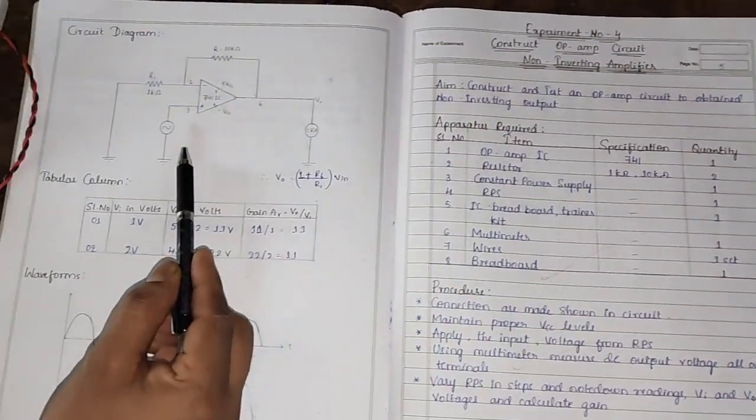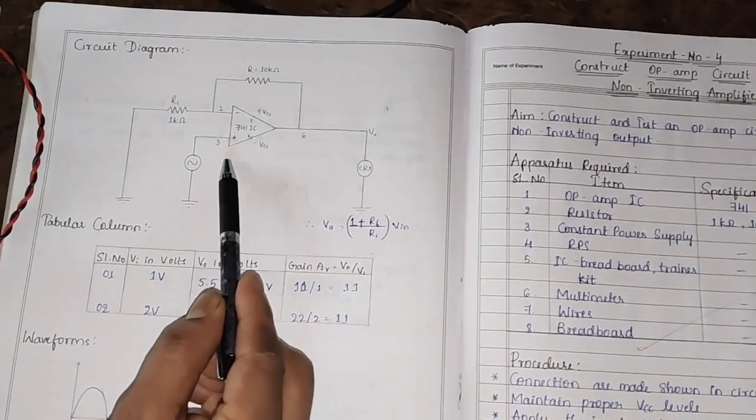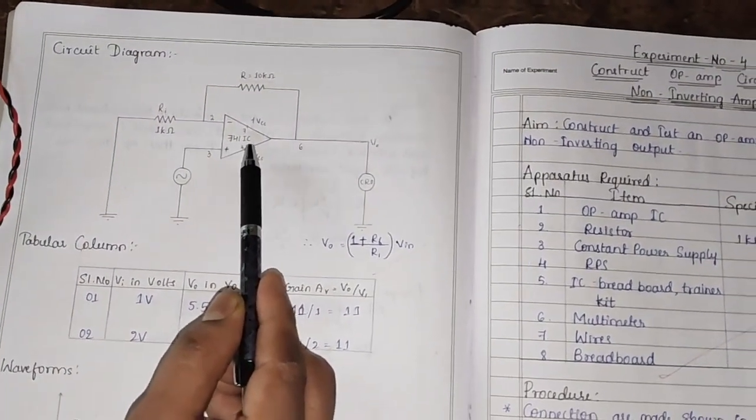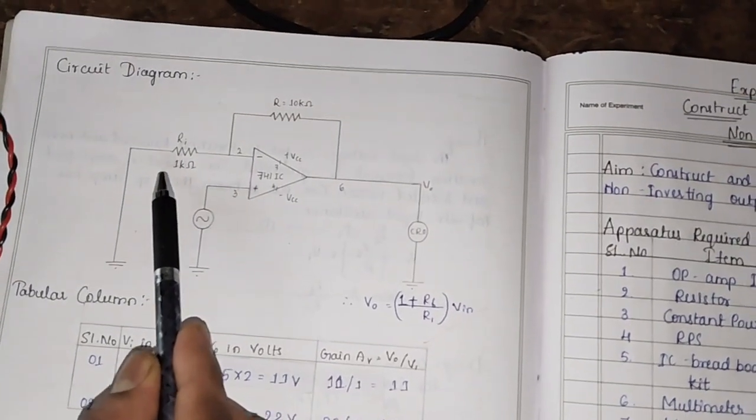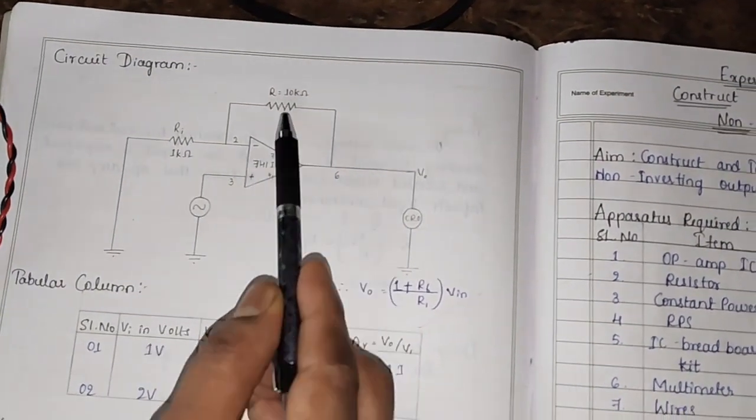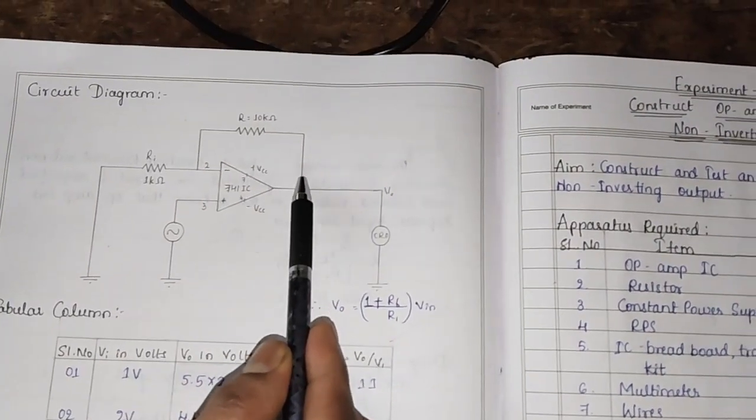In the circuit diagram, here we can see it consists of op-amp IC 741 and an input resistor R1 of 1 kilo ohm, and a feedback resistor of 10 kilo ohm.